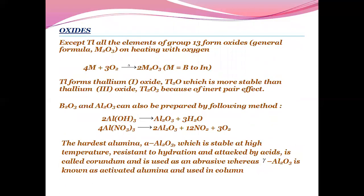Oxides: Except thallium, all elements of group 13 form oxides of general formula M2O3 on heating with oxygen. Thallium forms thallium oxide Tl2O where it is more stable than thallium(III) oxide because of inert pair effect. Boron oxide and aluminium oxide can also be prepared by other methods. The hardest aluminium oxide, that is alpha aluminium oxide, which is stable at high temperature, resistant to hydration and attack by acids is called corundum and is used as an abrasive, whereas gamma aluminium oxide is known as activated alumina and used in column chromatography.